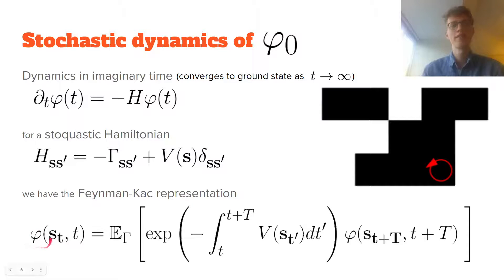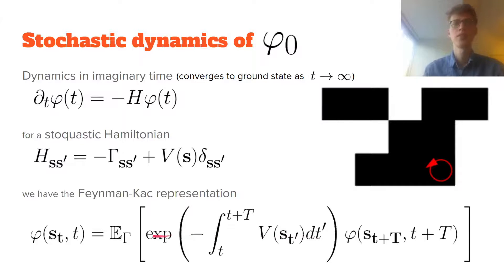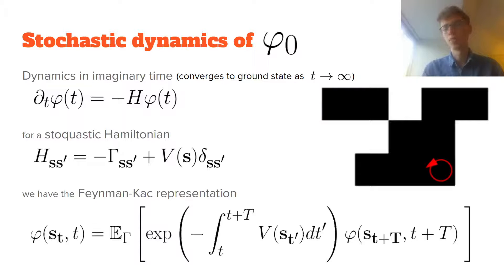The Feynman-Kac representation says that the wave function at a certain time can be related to the wave function at a later time by averaging over all trajectories of moves between those times. In this expectation, trajectories are weighted by the potential energy: trajectories through high energy regions have lower weighting than those through low energy regions.